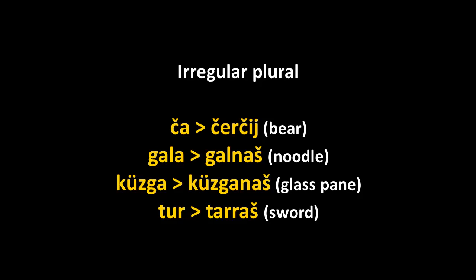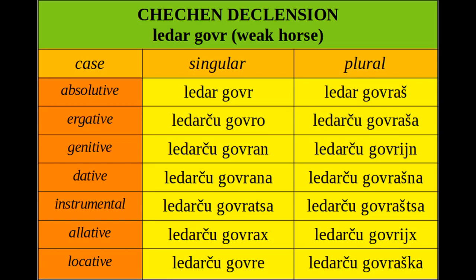These ancient consonants tend to return to life, much like what happens in Latin and Greek. Here we can see the Chechen declension chart. I took a very regular noun, goer ('horse'), with the adjective ledar ('weak'). So 'a weak horse' is ledar goer. In the absolutive case we have ledar goer; in the plural, ledar goer. Notice that the adjective does not go to the plural.